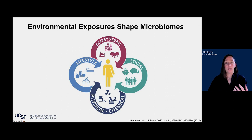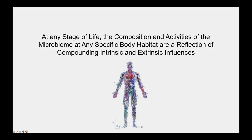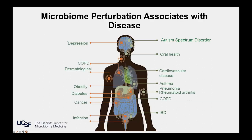To pull all of this together — thinking about the microbiome across temporal and spatial gradients with these environmental exposures — if we take a sample from anyone at any stage of life, the composition and activities of the microbiome in their specific personal microbiome at any one site is really a reflection of intrinsic and extrinsic influences on those microbes. Some of these influences are compounding over time, meaning that they compound damage to the microbiome over time. And so it's not surprising that increasingly we are finding that perturbations to microbiomes across various body habitats are associated with an ever-expanding range of diseases.